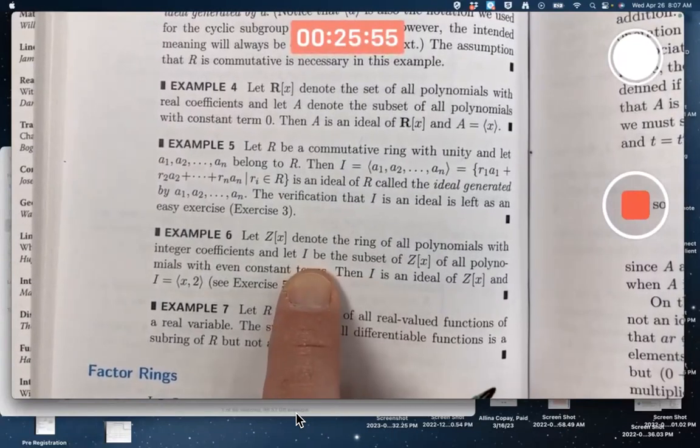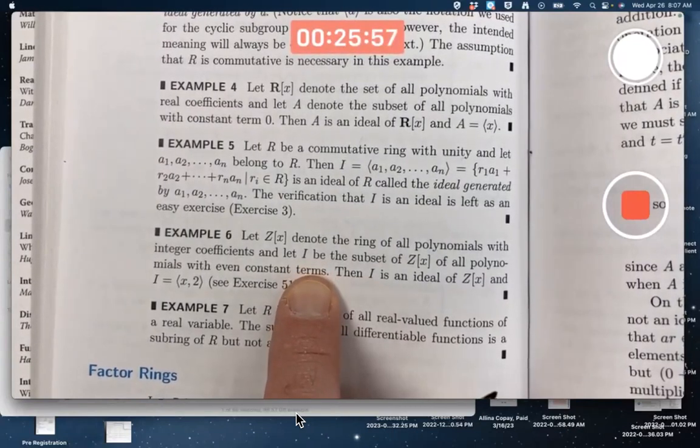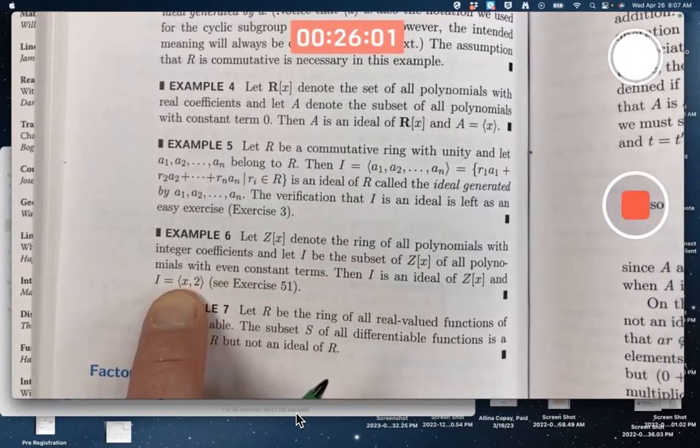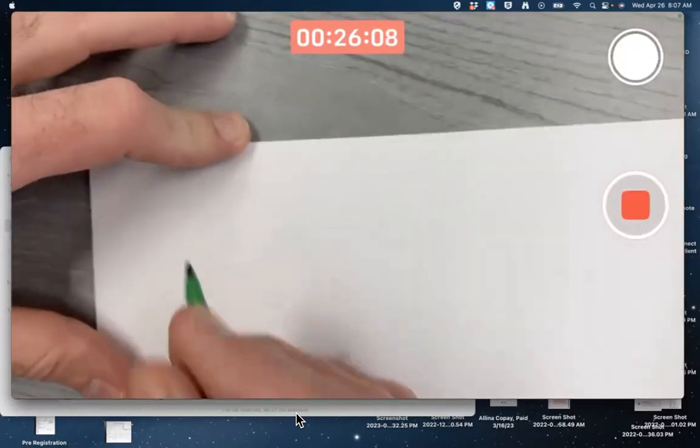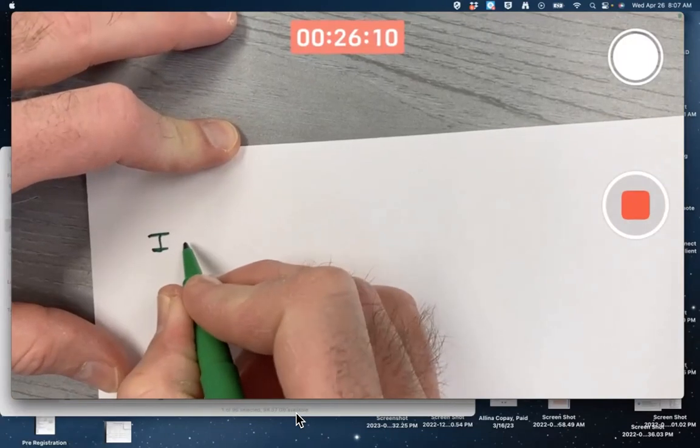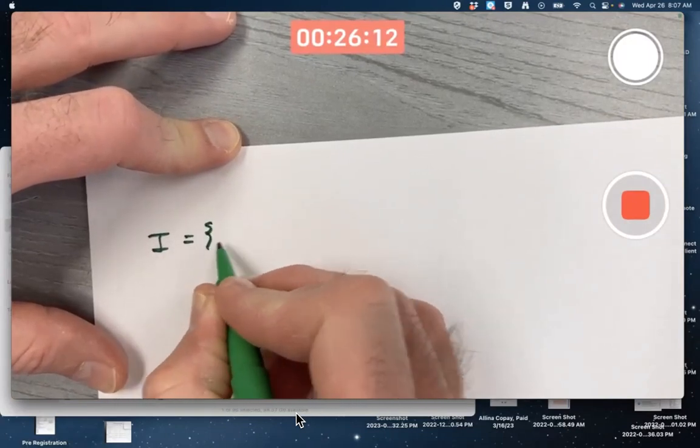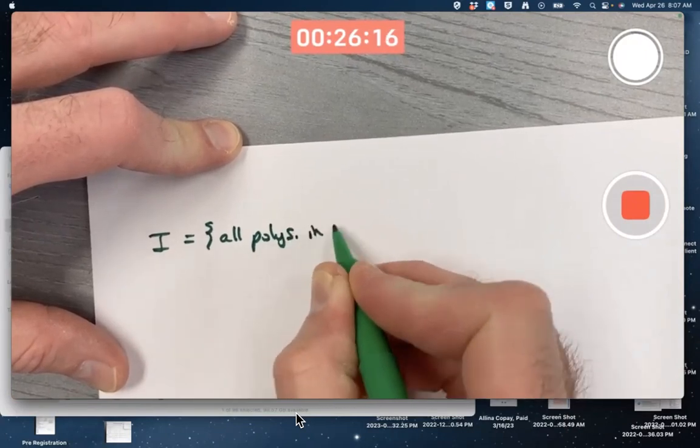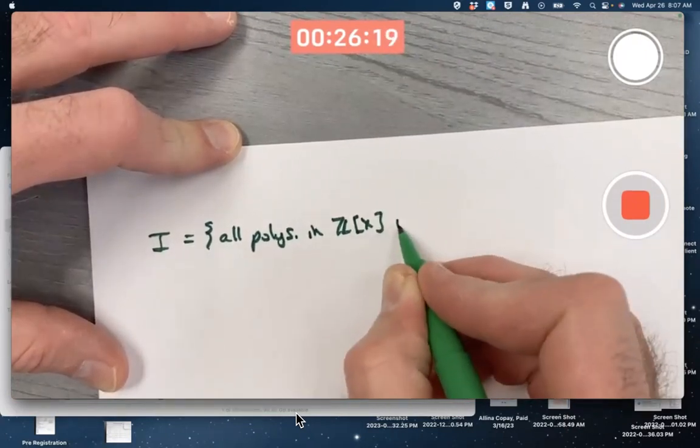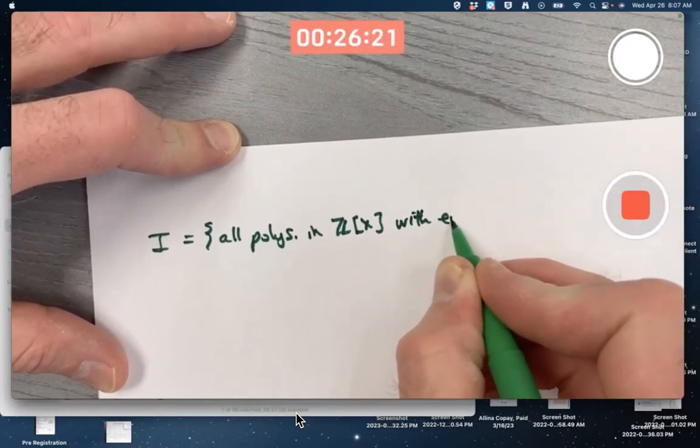So this ideal, all the polynomials with an even constant term, can be written in this way. Think about that.